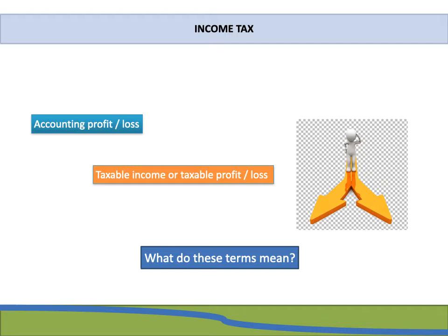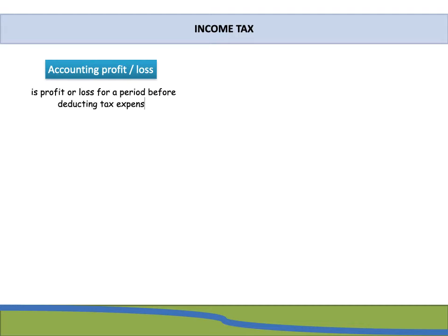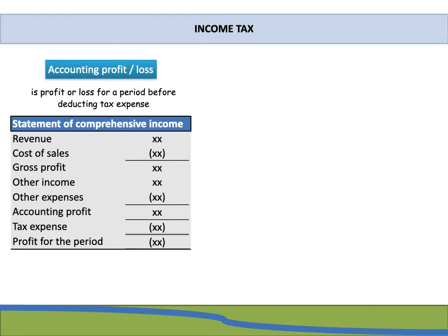Let's have a look at the term accounting profit or loss. This is the profit or loss for a period before deducting tax expense. If we take an extract from the statement of comprehensive income, we have all the income — revenue and other income — and from that we deduct all the expenses: cost of sales as well as other general expenses. The accounting profit is the final line before deducting your tax expense.